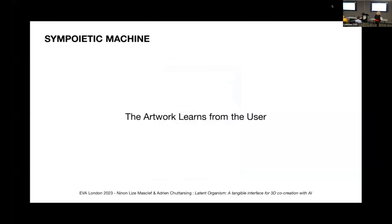Furthermore, in Latent Organism, a double learning process takes place. On the one hand, we have the new expertise that individuals develop towards the AI system. And on the other hand, the interface gets to know the audience and adapts to them, trying to suggest formations similar to the ones they interact with the most.